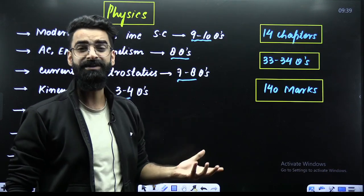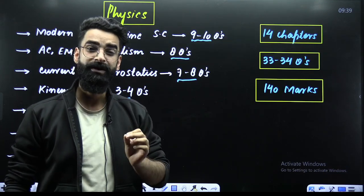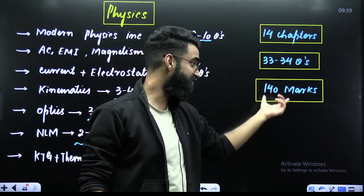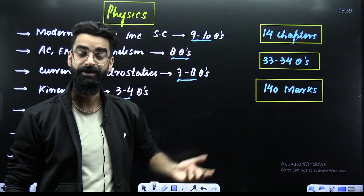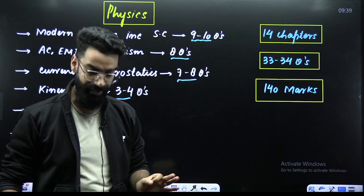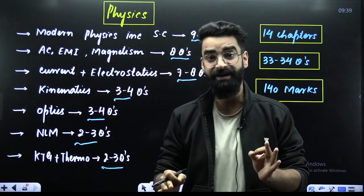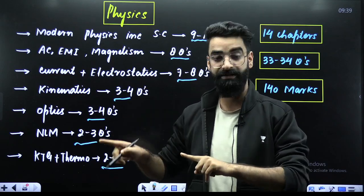But you have to complete these chapters effectively. You cannot skip a single topic out of these chapters. And my dear students, from these chapters itself, you are getting 140 in your Physics. Again, I'm repeating the same thing. You have to prioritize these chapters the maximum. That does not mean you'll avoid all the other chapters.